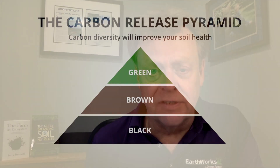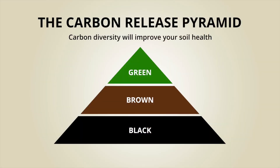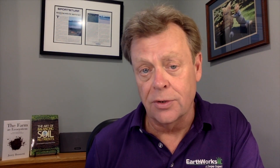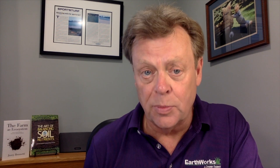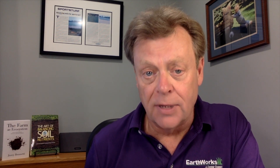Look at this pyramid picture that we've developed. We talk about green, brown, and black carbon sources. Green carbons are very available sources, but not very long-lived. Brown carbon sources are more sustainable, have some availability, and can provide a little bit more legs in feeding microbial populations. Whereas the black carbon — things like humic substances — are very sustainable, and oftentimes are not available as a food source for microbiology, but do provide a real haven for microbial populations.